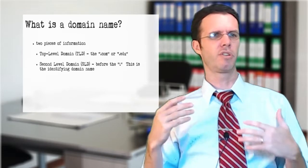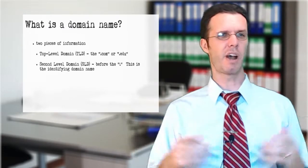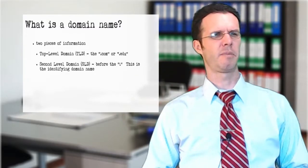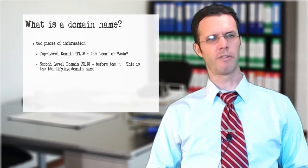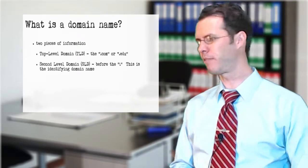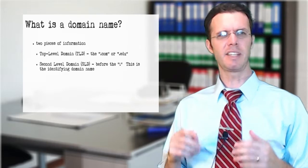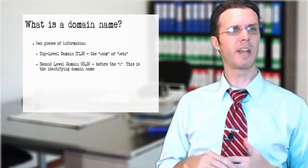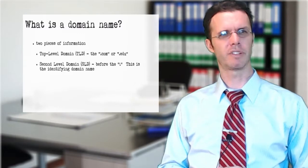It's basically made up of two pieces of information much like your house address. Your house address has your house and your street. Domain names are very similar. The first part of the domain name is known as the top level domain. It's the .edu, it's the .com, it's the .edu and spcollege.edu for example.